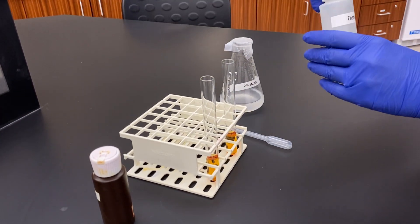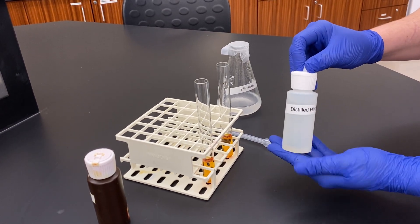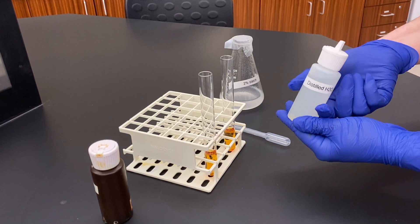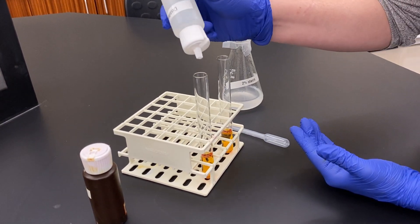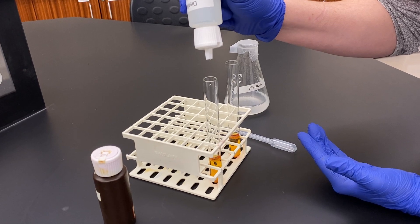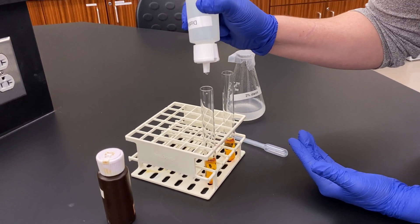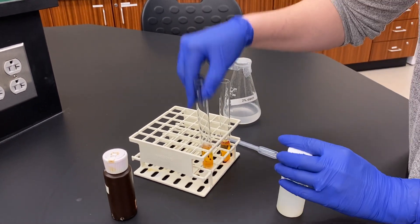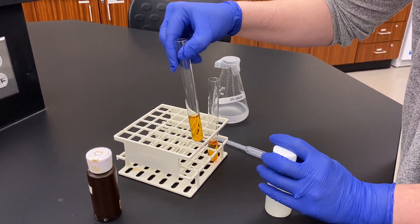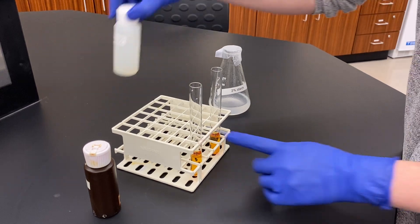We are going to add ten drops of deionized water to our negative control. This does not have starch so there should be no reaction. Adding the ten drops and shaking it up a little bit just to make sure it's all homogenized. So that's my negative control.